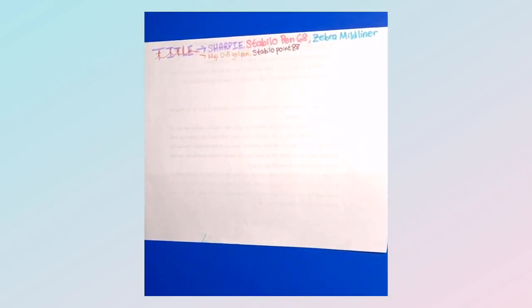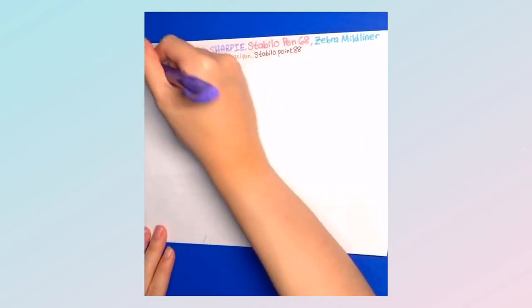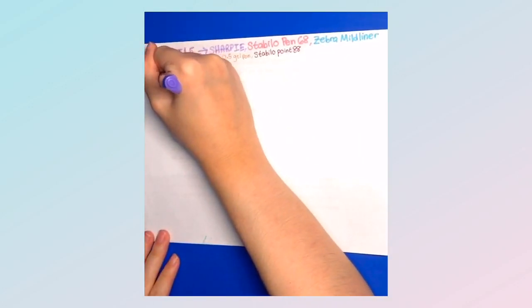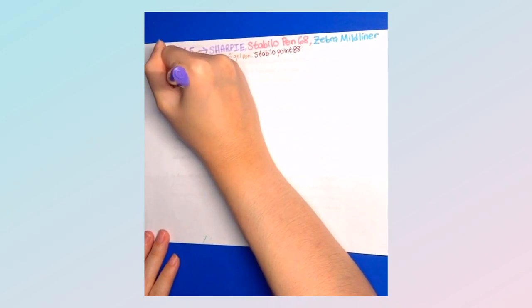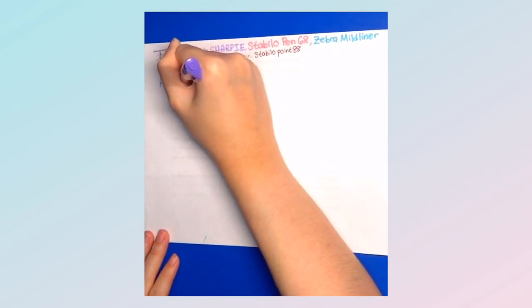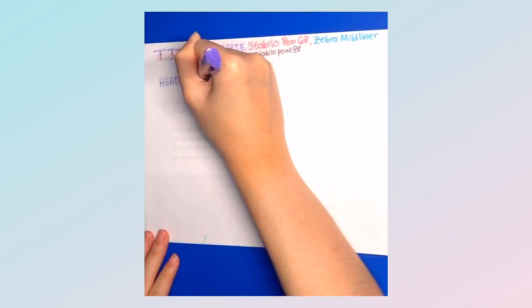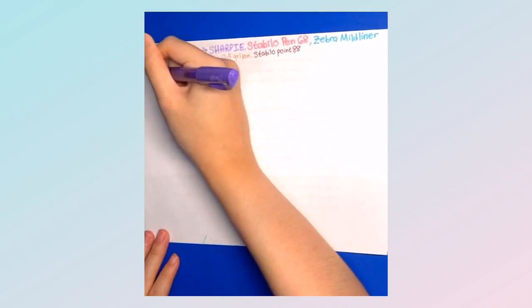Next, I will write the first heading and usually the first heading is either a term or like types of something and so on. And I usually use my highlighter for this and it's still all caps and I also use my highlighter when making the bullet point.